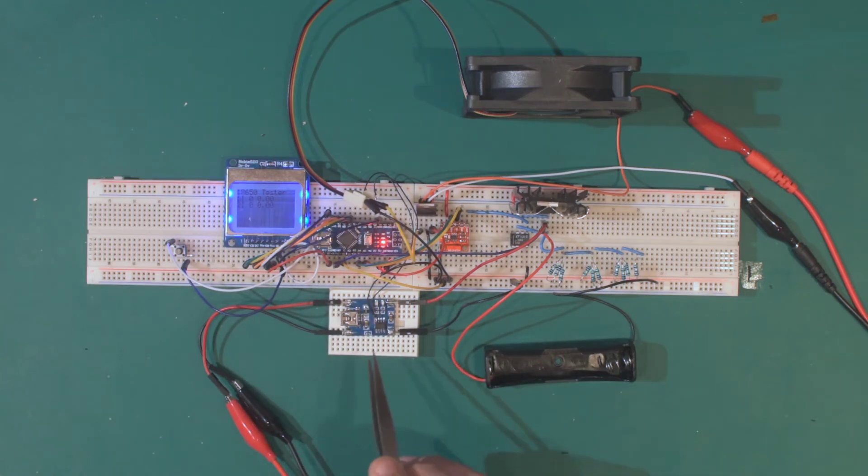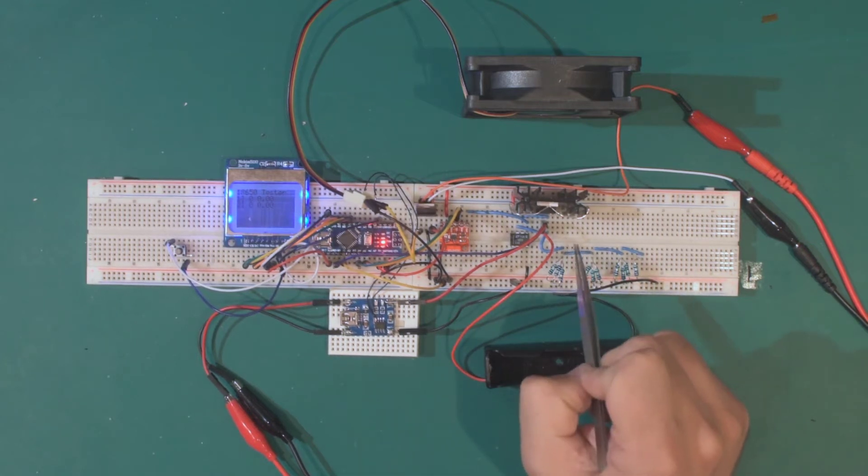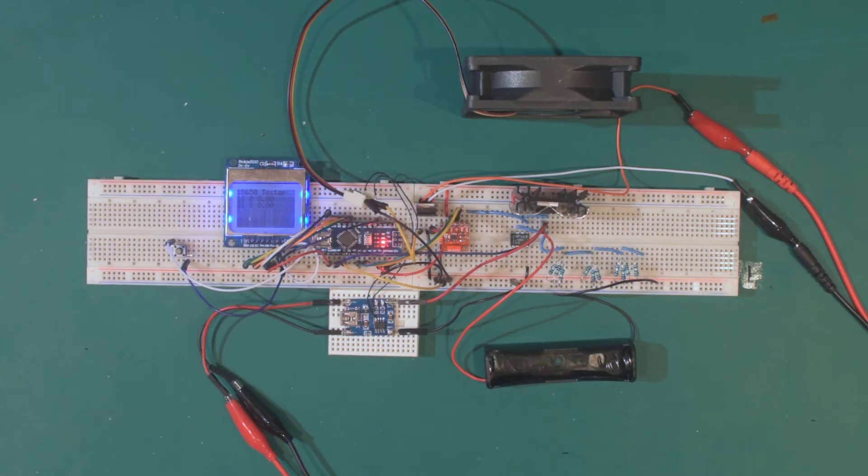When initiated, it will charge the battery before switching over to a constant current discharge and logging the capacity of the battery. As you can see, I've changed the display slightly. The display now shows an I for idle.